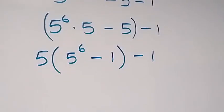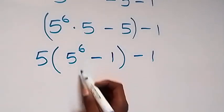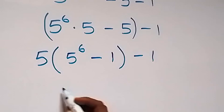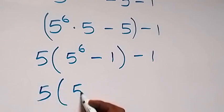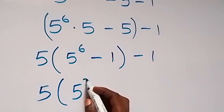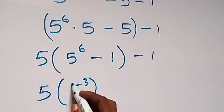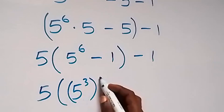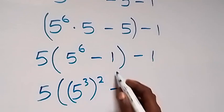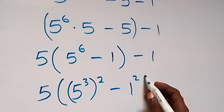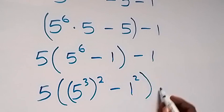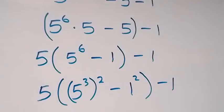Then from here, we can write 6 here as 3 times 2. Here we have 5 into bracket. 5 raised to power 3, then raised to power 2, then minus. Also here, we can write 1 as 1 squared, then close bracket minus 1.